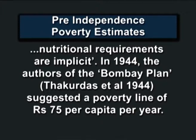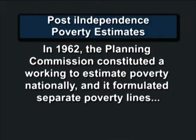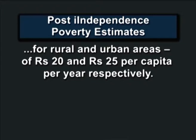In 1944, the authors of the Bombay Plan (Thakur Das et al.) suggested a poverty line of rupees 75 per capita per year. For post-independence poverty estimates: in 1962, the Planning Commission constituted a working group to estimate poverty nationally, and it formulated separate poverty lines for rural and urban areas of rupees 20 and rupees 25 per capita per month respectively.